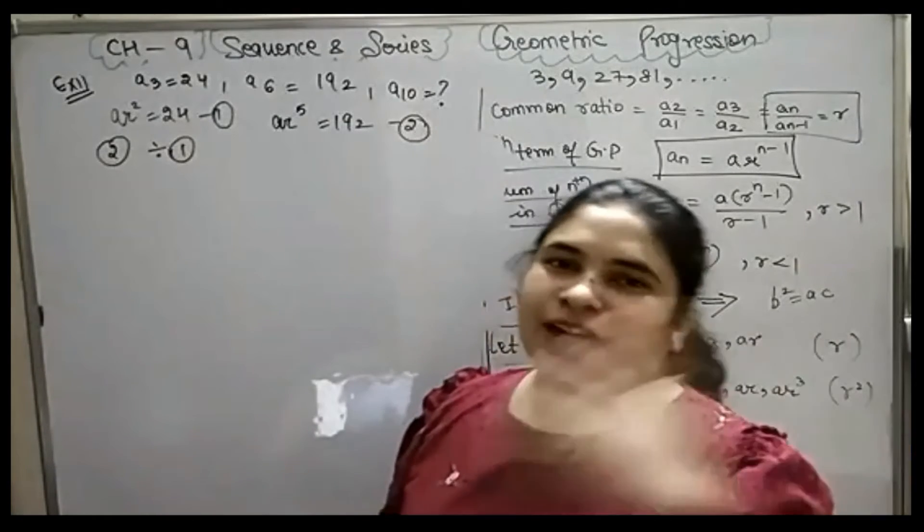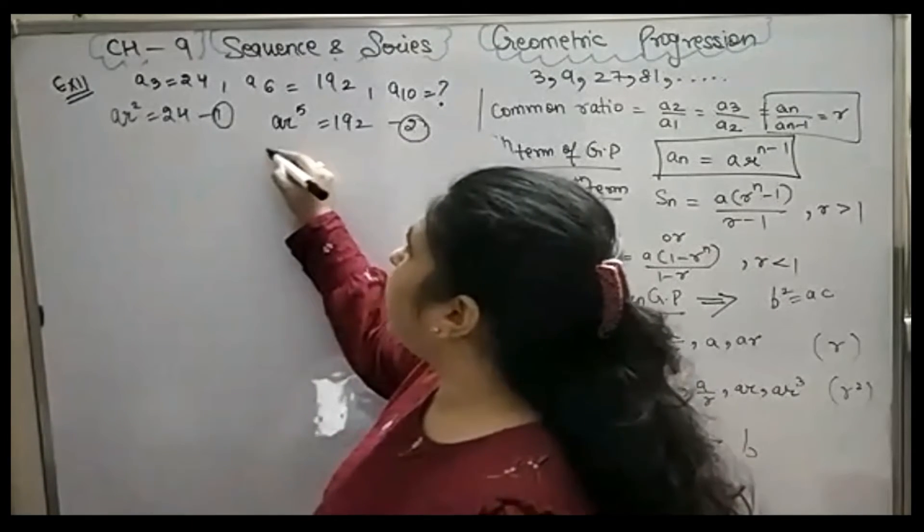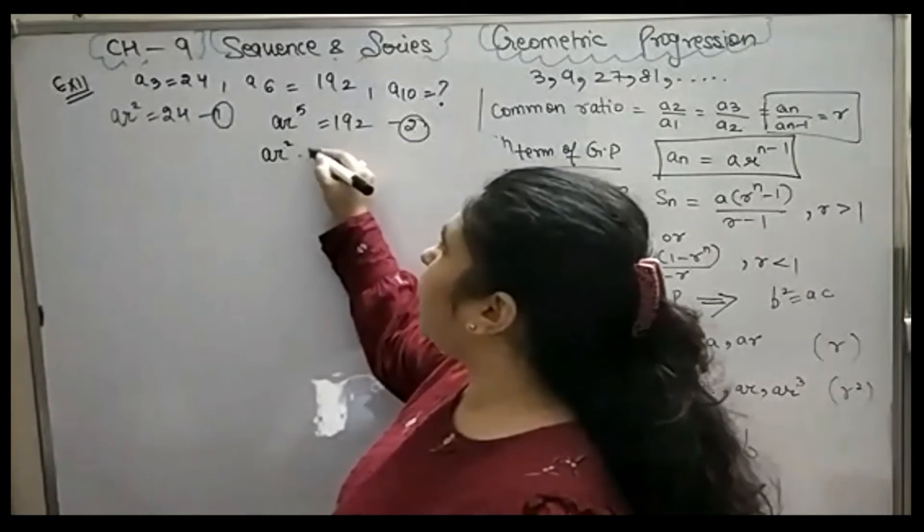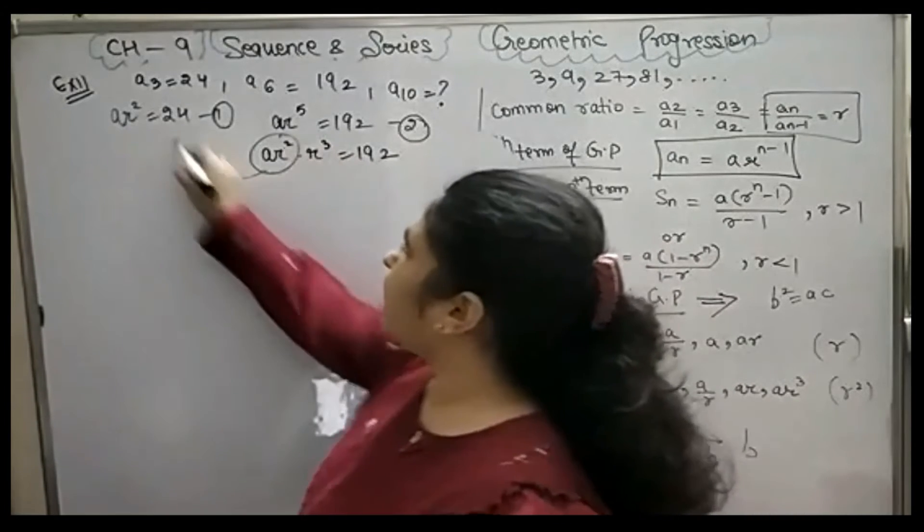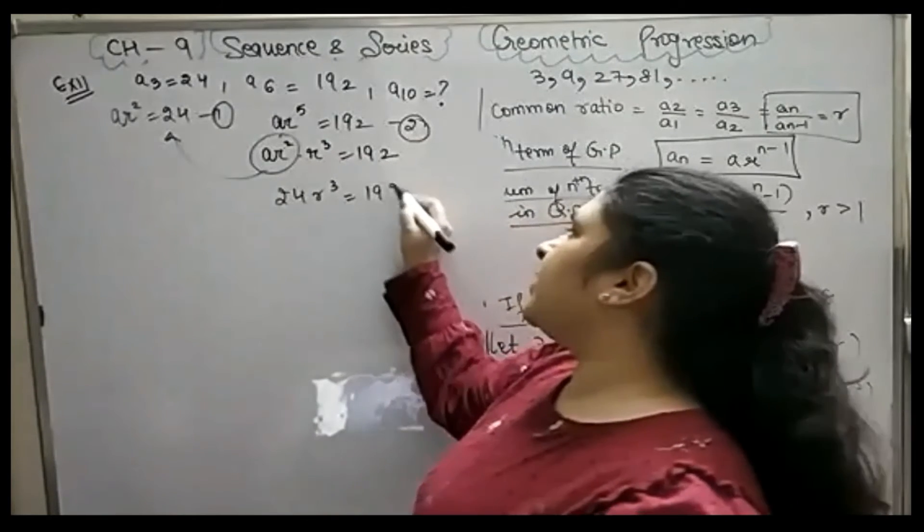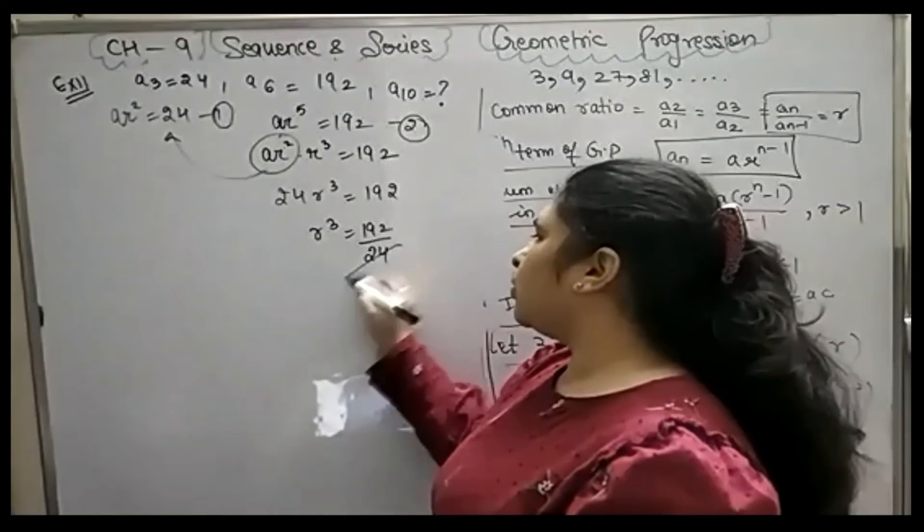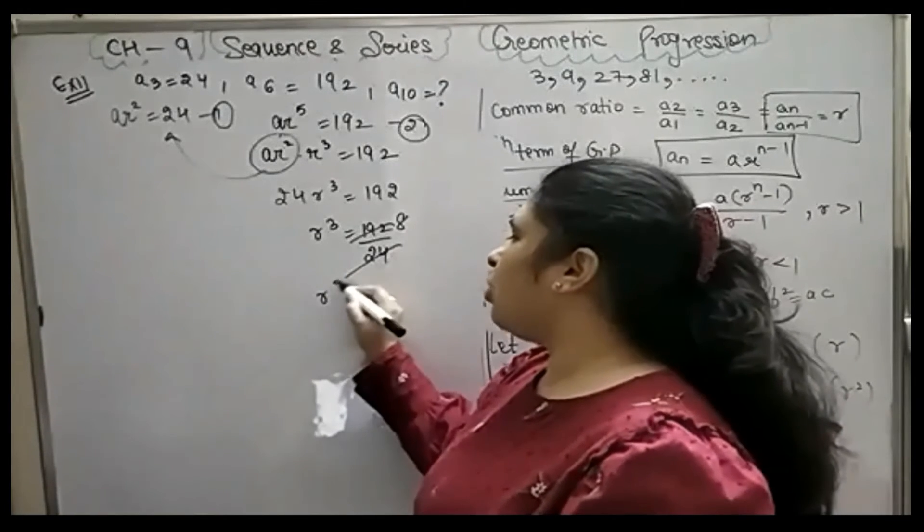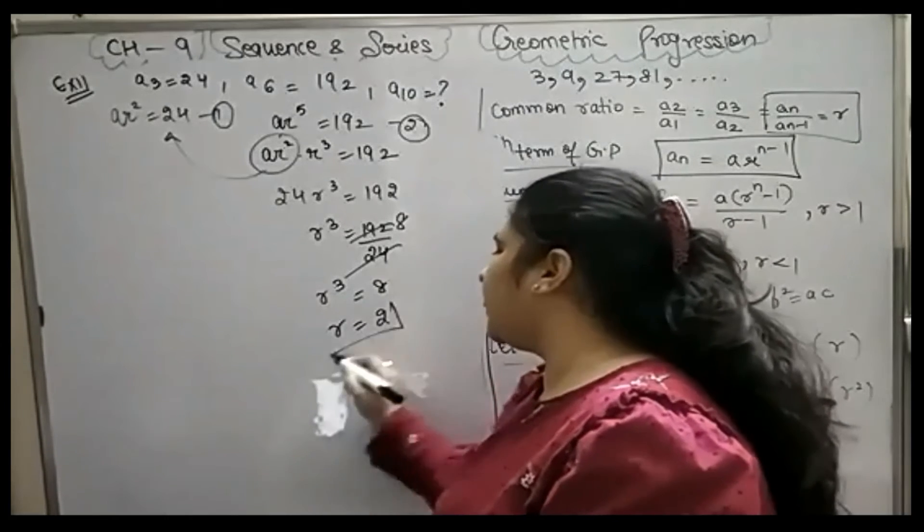You can put the value in the other one. If you want, you can do this: AR squared into R cubed is equal to 192, where AR squared is equal to 24. So in your own way, you can use the options. So 24 times R cubed equals 192, which gives R cubed equals 8. How much value is R? 2.